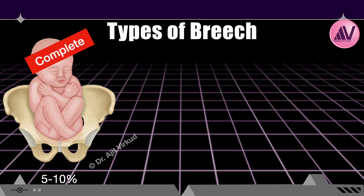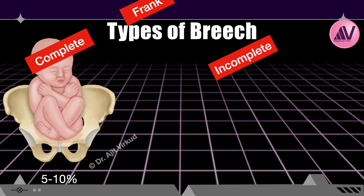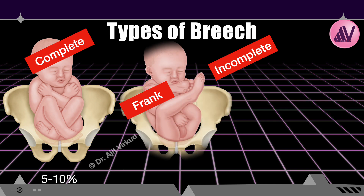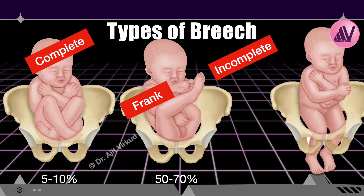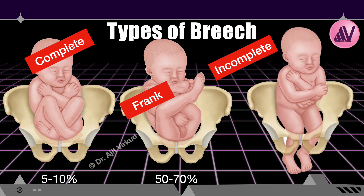Presentations with less than these presenting parts are considered incomplete breech presentations. Examples include frank breech, which accounts for approximately 50–70% of breech presentations, and genuine presentations which involve either a single or double footling or kneeling. Genuine presentations account for 10–30% of breech presentations.